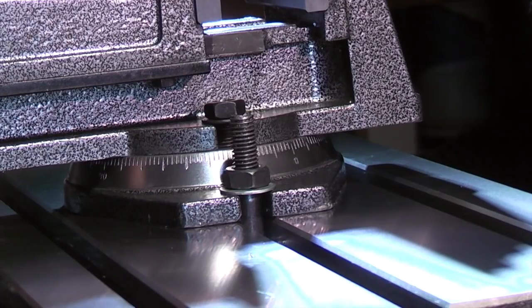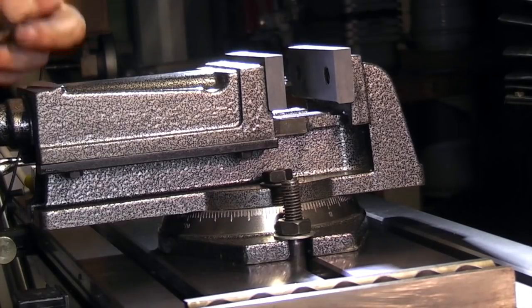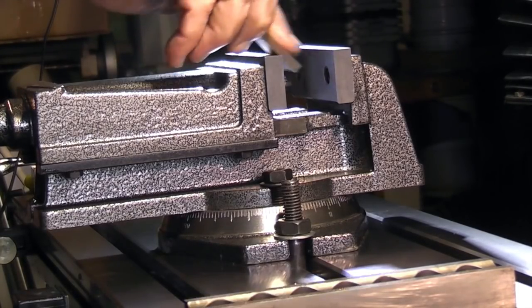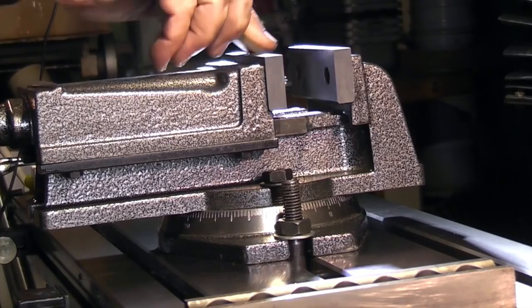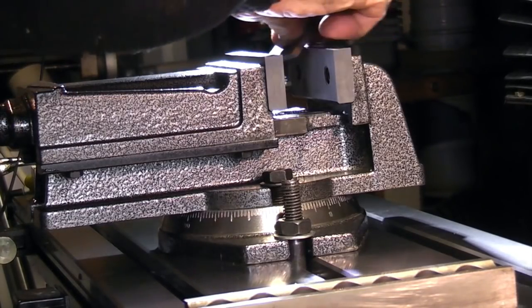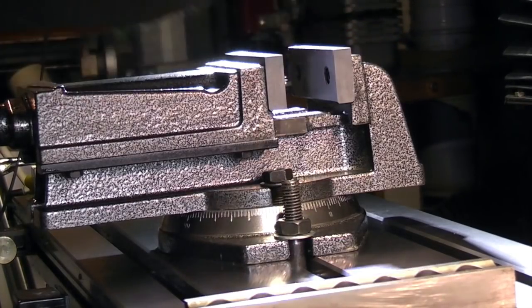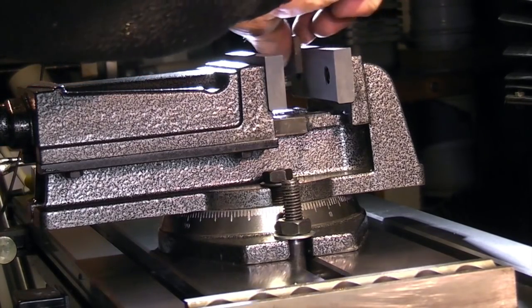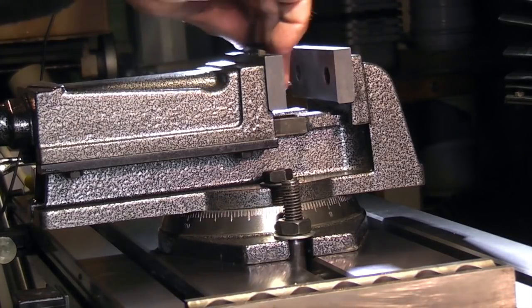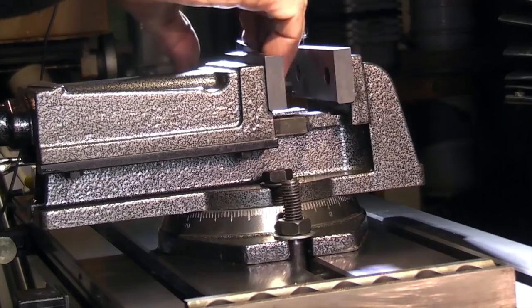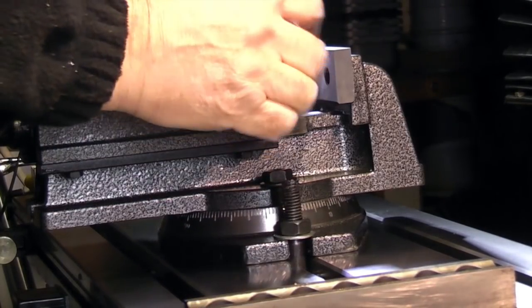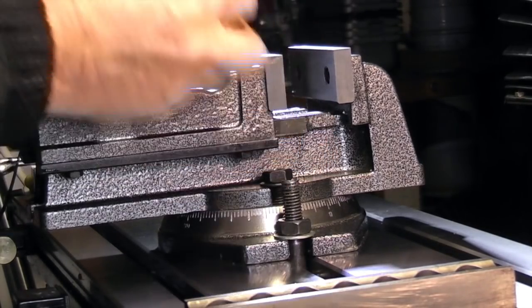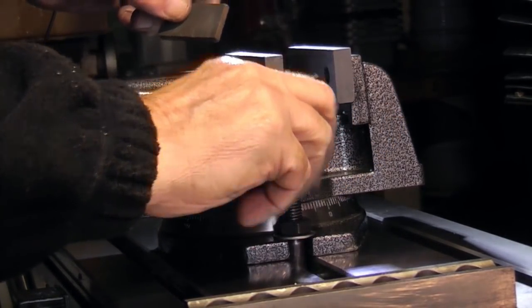What we'll do is hold the dial indicator in the spindle and we'll clock up the parallel strip held in the vise. I'm just putting an oil stone across the corner of the vise jaws to take off any burrs. Quite sharp edges and the slightest knock on this edge would create a burr on the face.